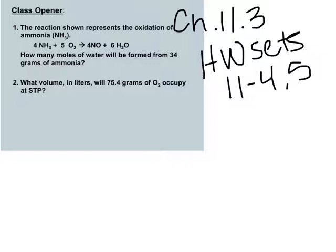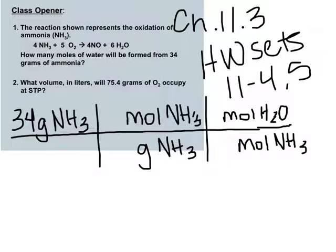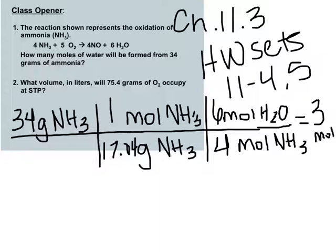I'm going to set it up and play. Okay, so here's your setup. We're going grams of ammonia to moles of ammonia to moles of water. So how many grams are in one mole? Get your green sheet, add up nitrogen and three hydrogens. You'll find it's 17.04. And then mole-to-mole ratio. Look at the equation. How many moles of water? Six. How many of ammonia? Four. Multiply and divide. You should get roughly three moles.